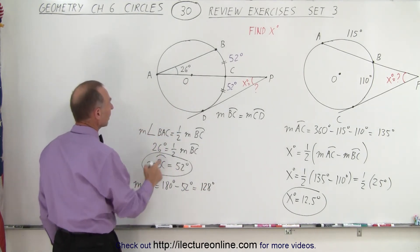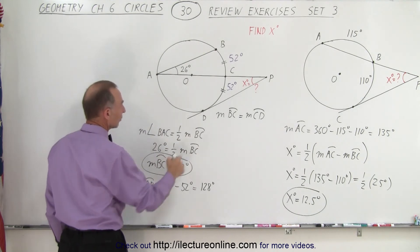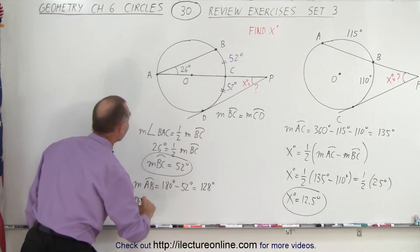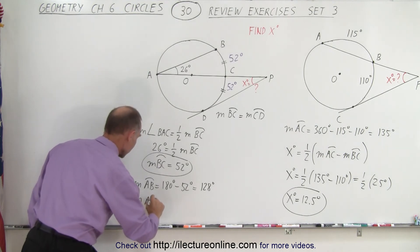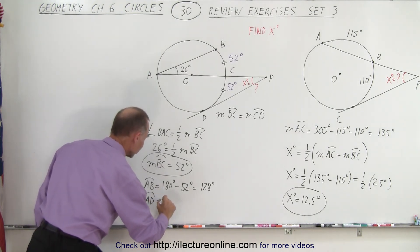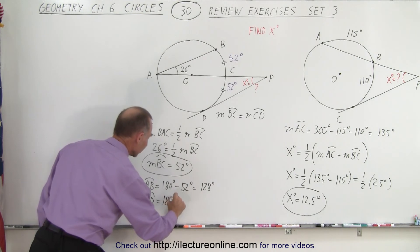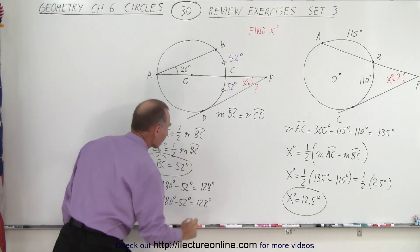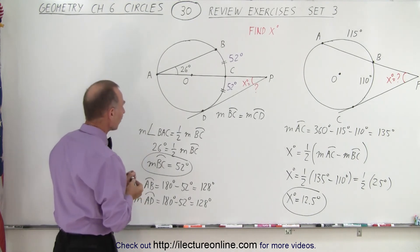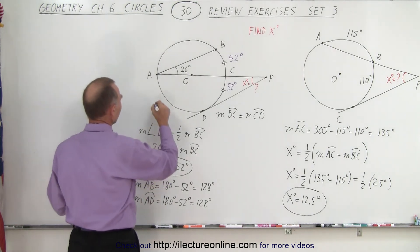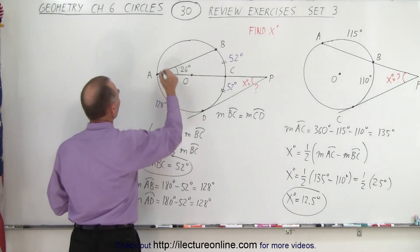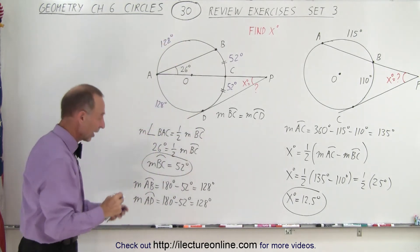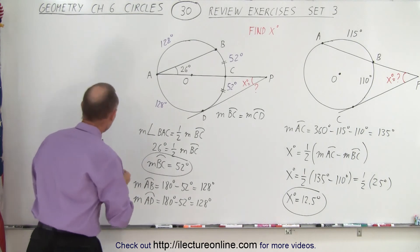Because it must be 180 minus 52. That means the measure from A to D is also equal to 180 degrees minus 52 degrees, which is 128 degrees. So now we have the measure of all these arc lengths. So we can write this down, 128 degrees, 128 degrees, and now we're ready to find the value for x.